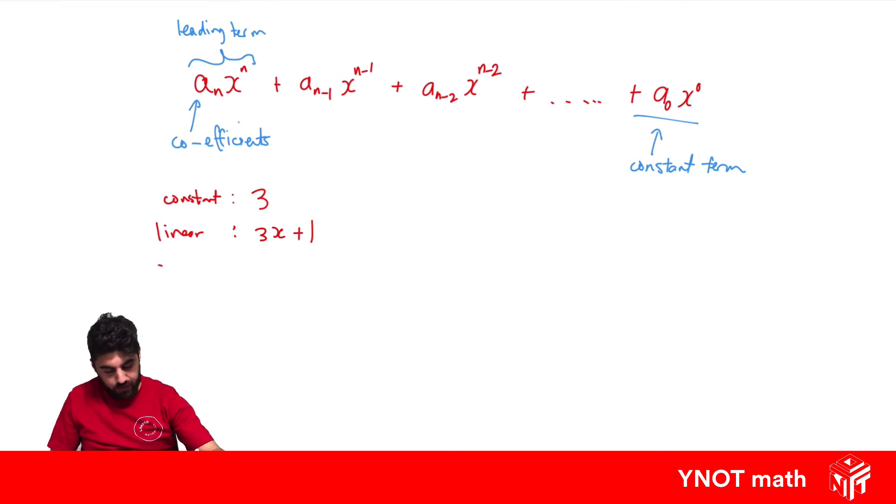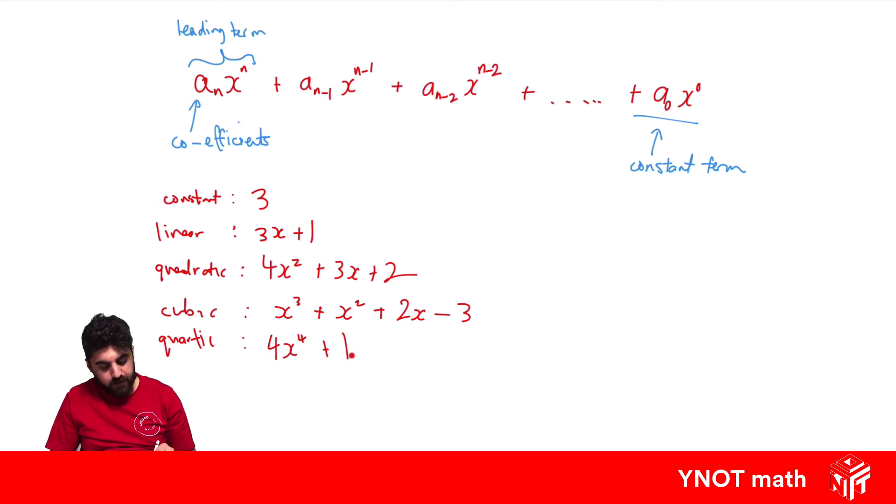And we can keep going, so we can get a quadratic, which is going to look something like 4x squared plus 3x plus 2. We can get a cubic, which will look something like x cubed plus x squared plus 2x minus 3. We can get a quartic, which might be 4x to the 4 plus 1. You don't have to have all the other terms with it, and so forth.